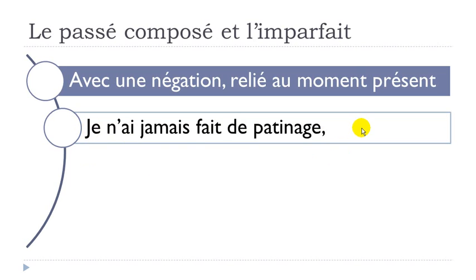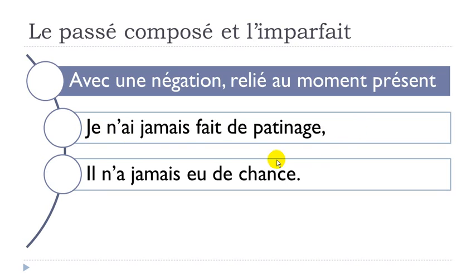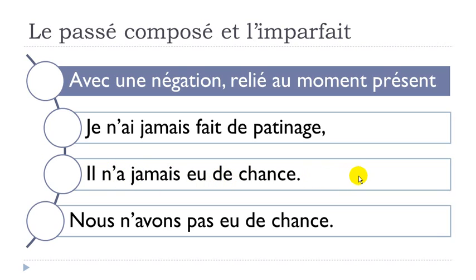Same examples: 'Il n'a jamais eu de chance' — avoir de la chance means to have luck, jamais means never — you should put that at the passé composé. And 'Nous n'avons pas eu de chance' — here with pas instead of jamais, but clearly the same meaning. In that case, you should definitely use the passé composé form.